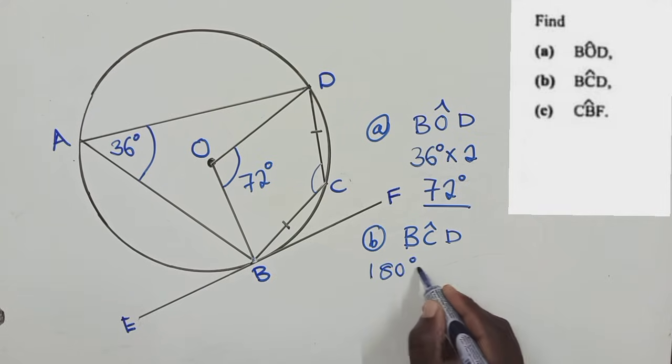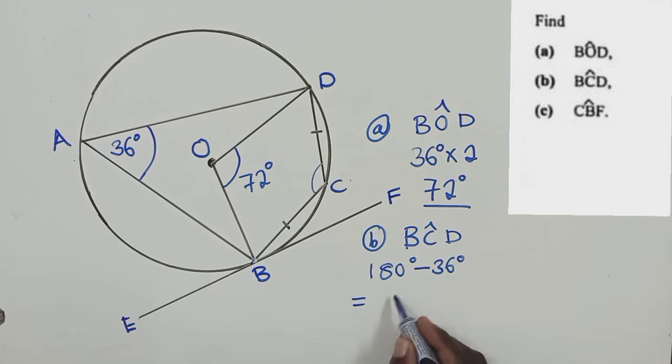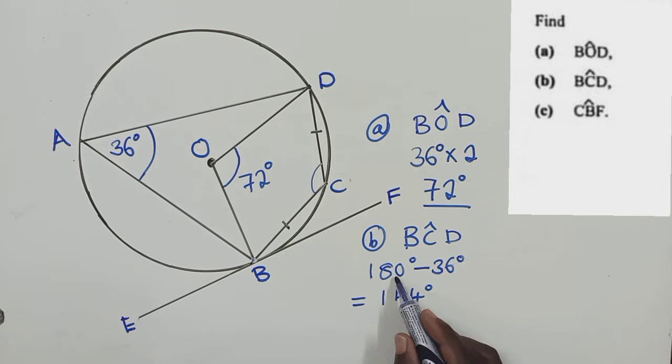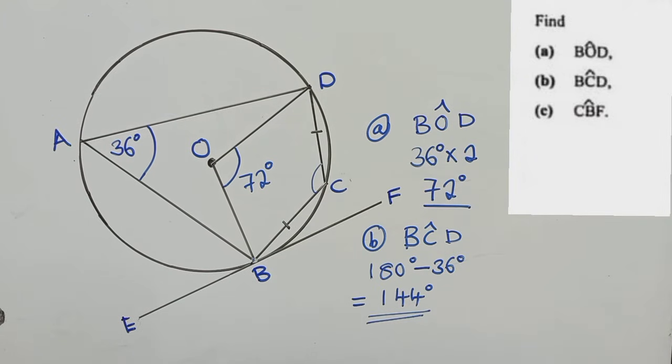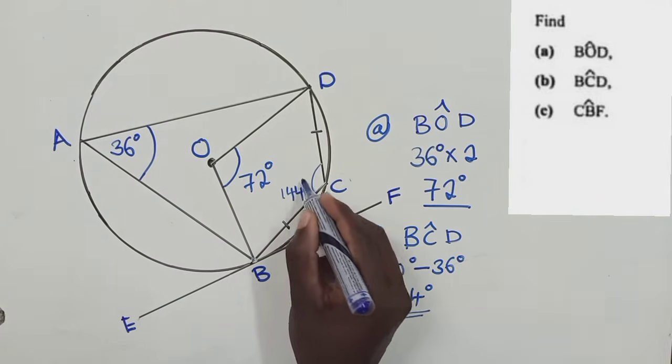So say 180 degrees minus 36 degrees. What are we getting? We are getting 144 degrees. Yes, 144 degrees. So this is our answer. So we can write 144 degrees.